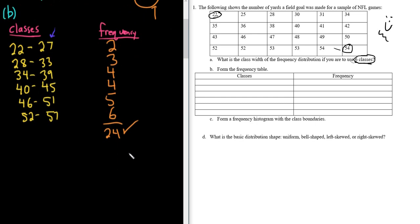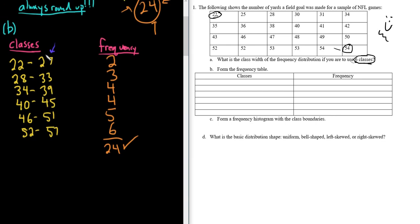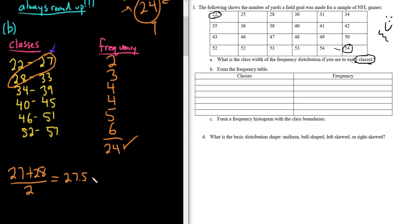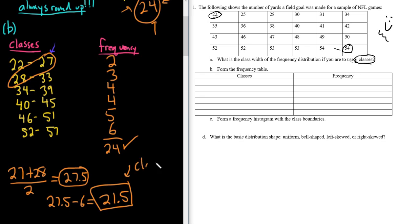Now for part C, the frequency histogram. We need the class boundaries — specifically the first lower class boundary. Take the upper limit of the first class and the lower limit of the second class, add them and divide by 2: that gives 27.5. That's the second class boundary. To find the first, subtract the class width: 27.5 minus 6 equals 21.5. That's our first class boundary.